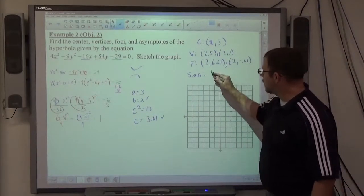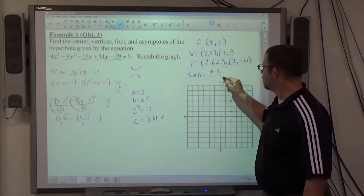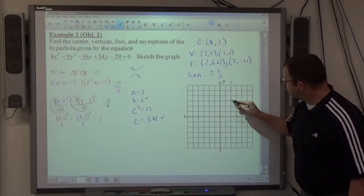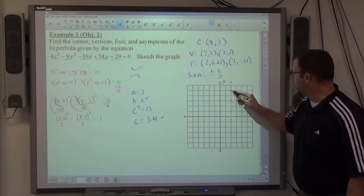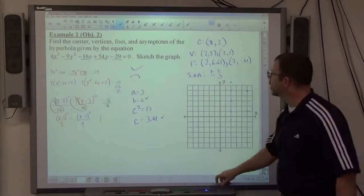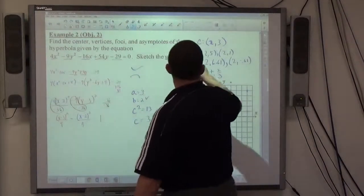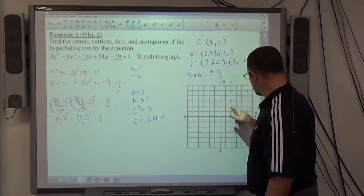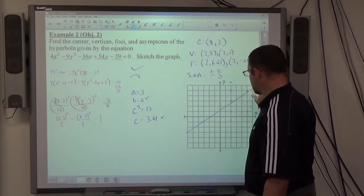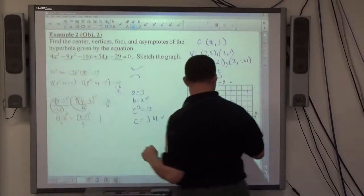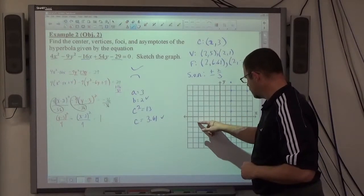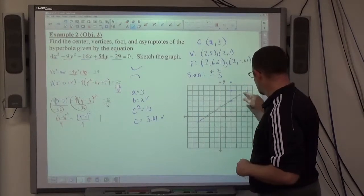My asymptotes have slopes of plus or minus 2 thirds. There's some difference. It was 3 halves in the other one. At least they changed something up. Plus or minus 2 thirds. So again, from the center, I'm going to go up 2 spaces, right 3. I'm going to go down 2 spaces, right 3. To get my secondary points there. So my slant asymptotes.